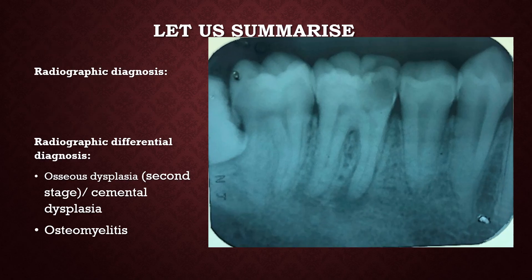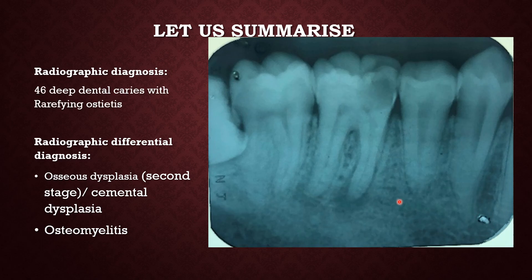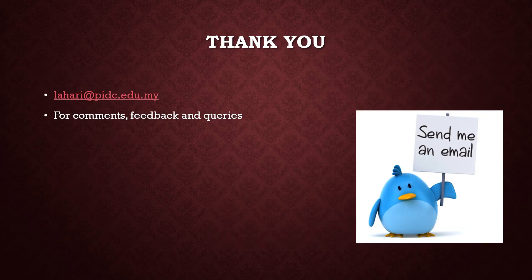To summarize: 4-6 has deep caries involving the pulp, with widening of PDL space, thickening of lamina dura, and loss of PDL and lamina dura at the apex, with a mixed radiolucent and radio-opaque appearance. This gives us the diagnosis of 4-6: deep caries with rarefying osteitis. The differential diagnosis could include cemento-osseous dysplasia in the mixed phase (second stage of the disease), and osteomyelitis, which also appears mixed radio-opaque and radiolucent. That brings us to the end of this radiographic interpretation. For comments, feedback, and queries, please send an email. Thank you.